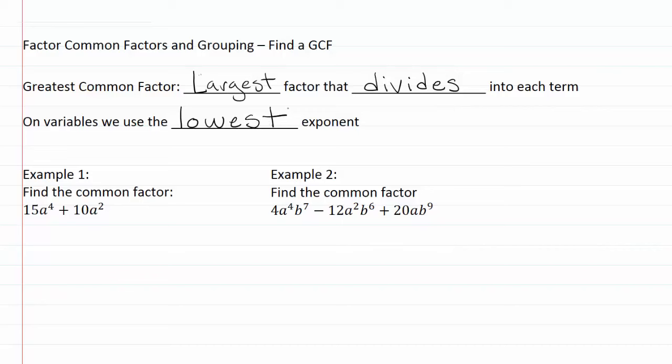Let's go ahead and take a look at a couple of examples. Our first example says find the common factor in 15a to the fourth plus 10a squared. We want to start out here by looking at our numbers. We've got 15 and 10. I can see that both of these numbers are divisible by five and there's nothing bigger that can go into both of them.